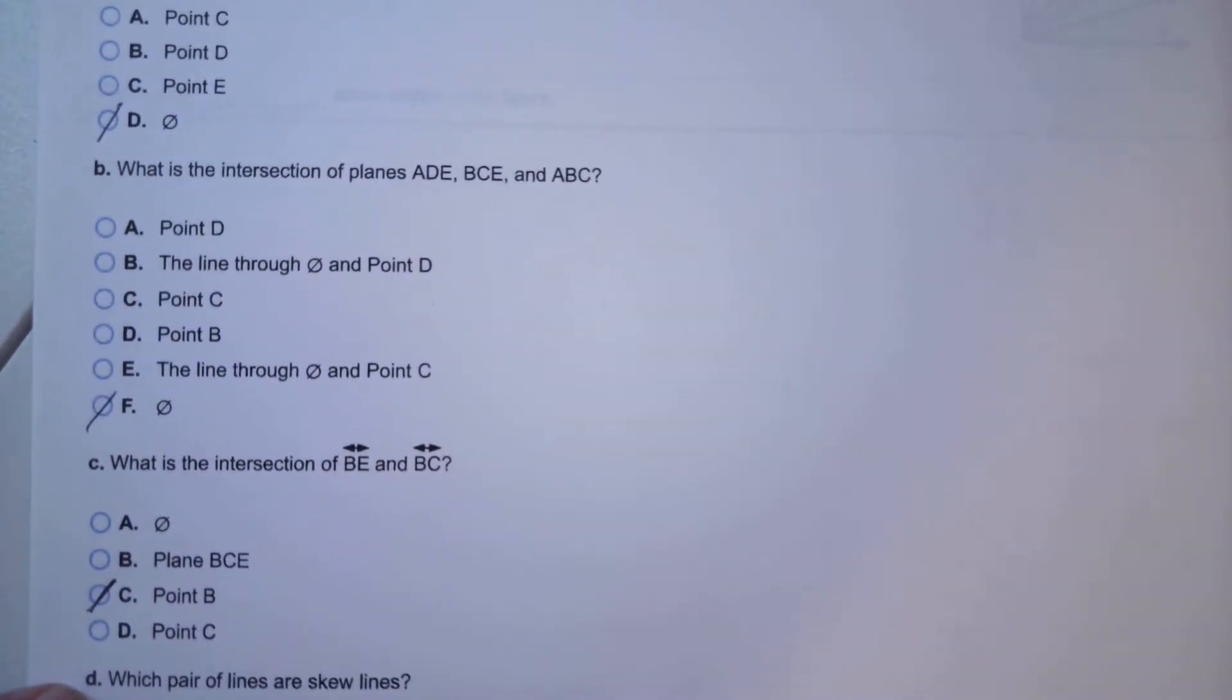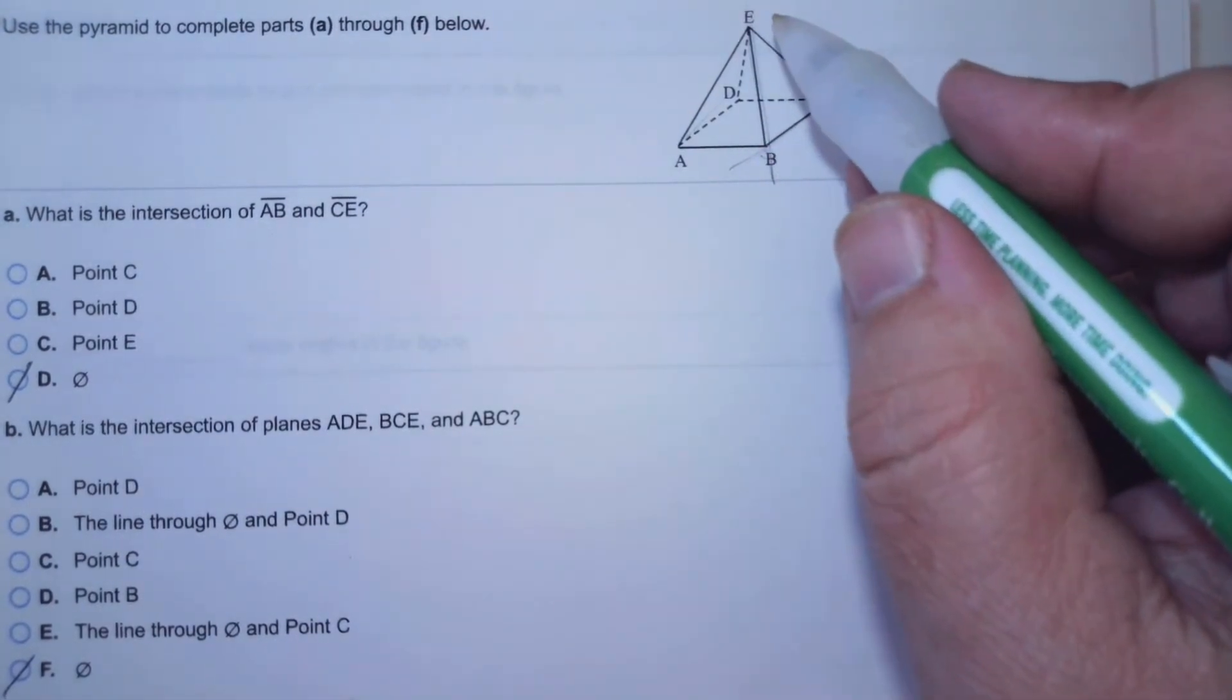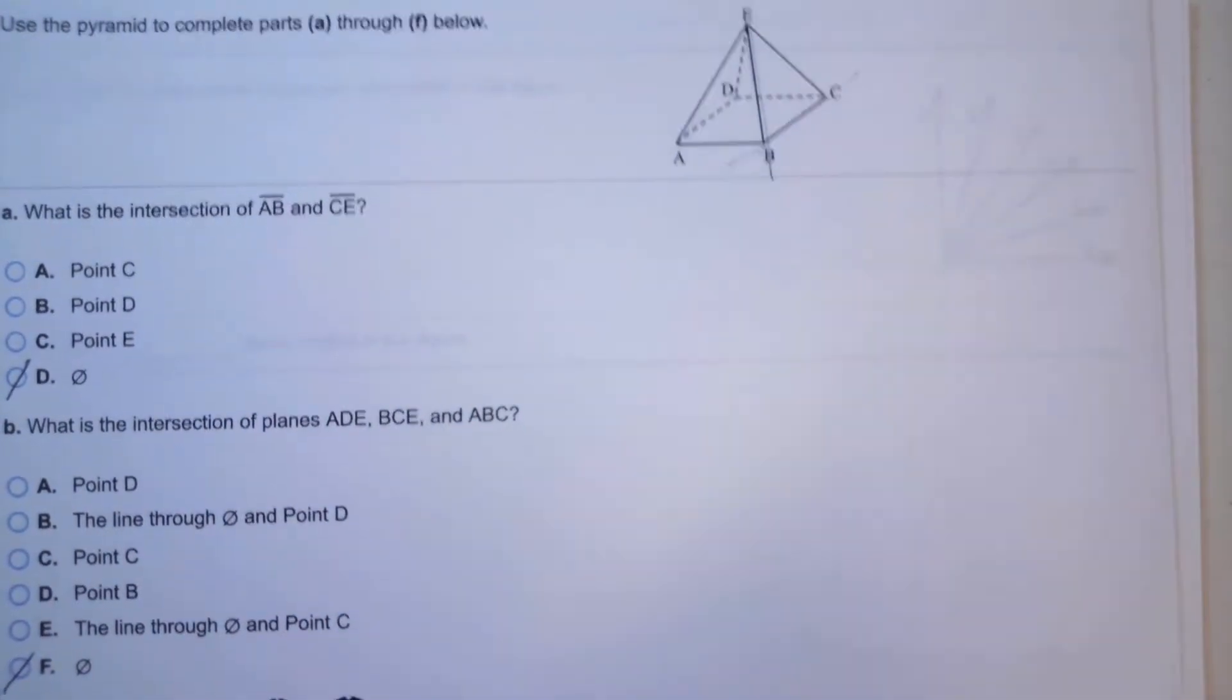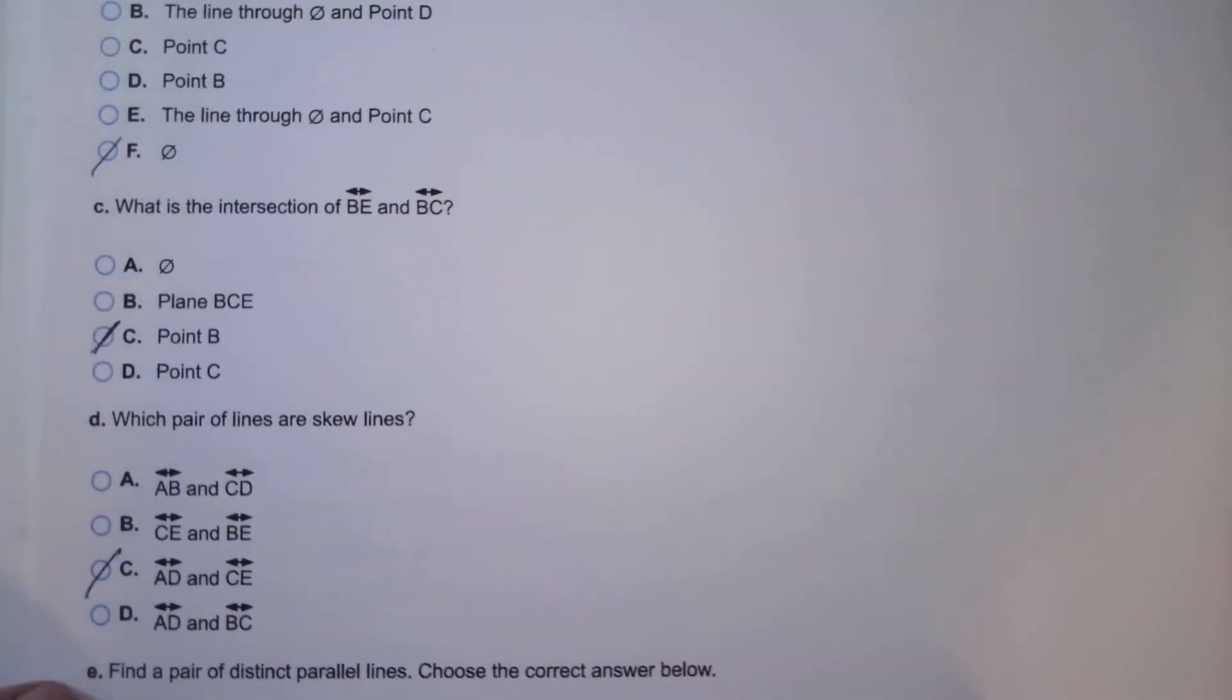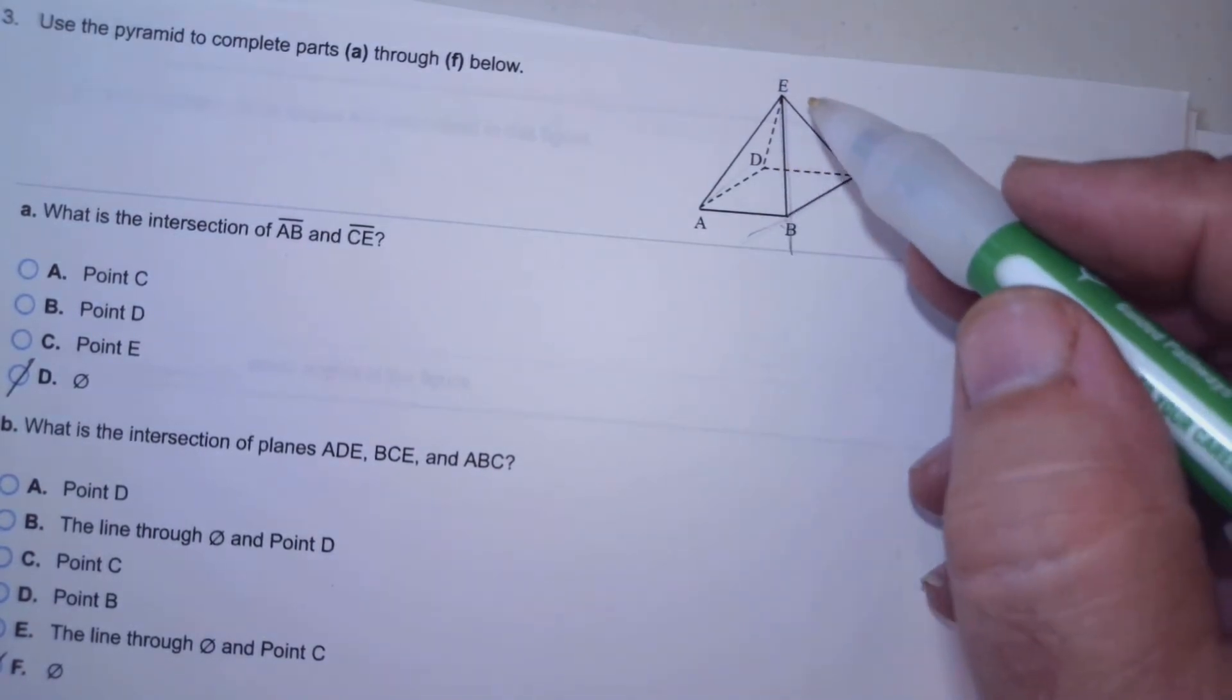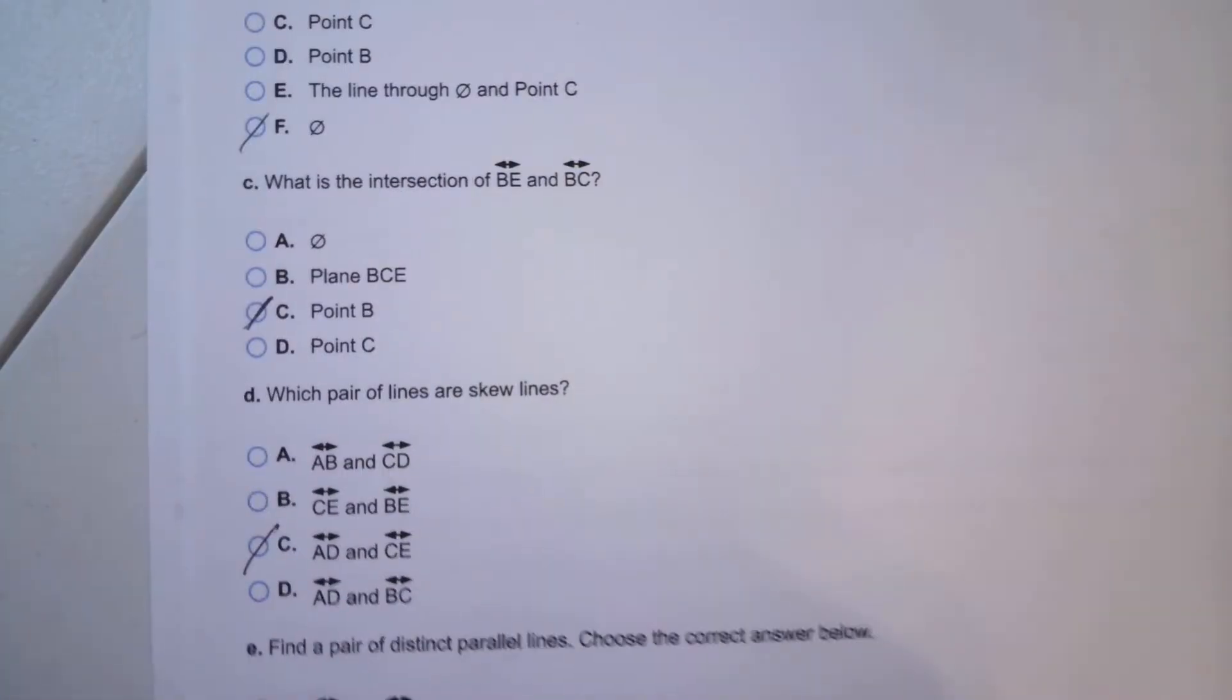Which pair of lines are skewed? AB and CD - that's parallel. CE and BE - they're intersecting. AD and CE - AD and CE are going different directions, non-coplanar. Find a pair of distinct parallel lines. AD and BC - they're parallel. That's right.